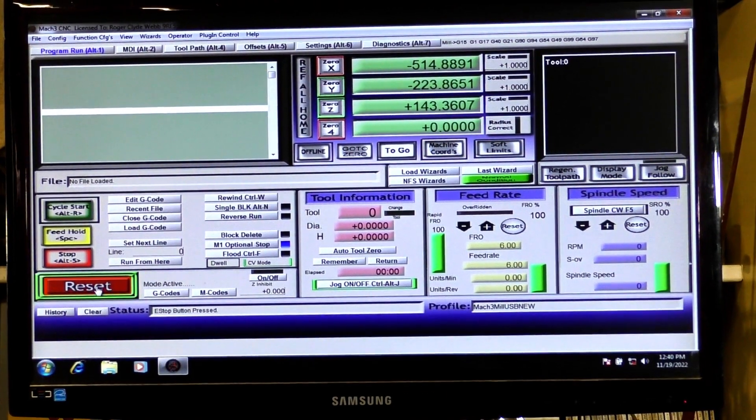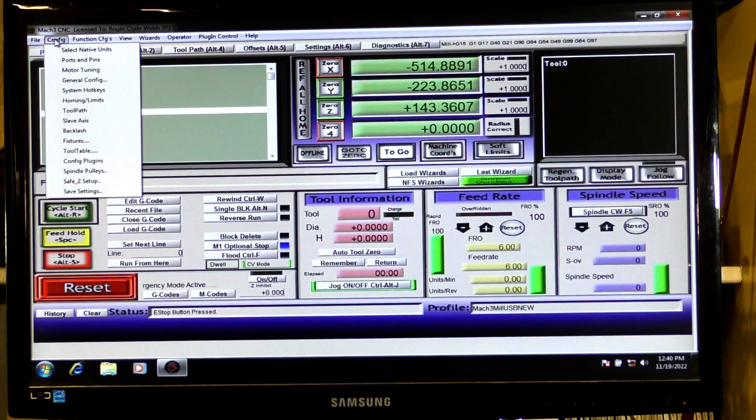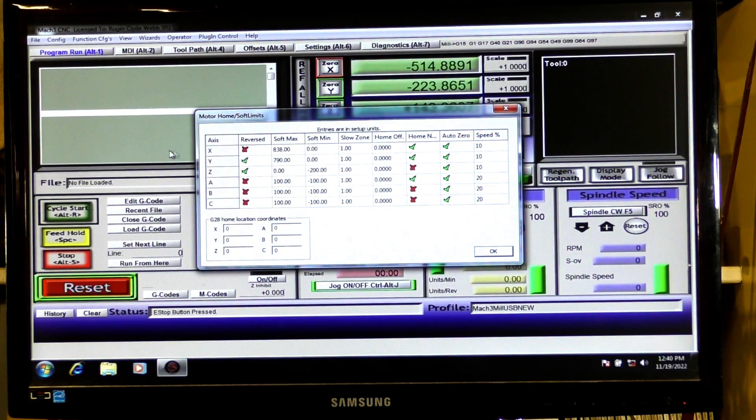So to change the direction of homing you go into config, homing and limits and then the axes that you want to change you come over to here and change the tick to an X to make it home in the opposite direction and press OK.